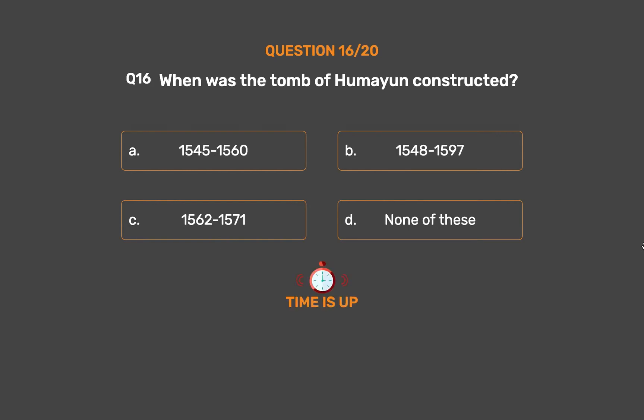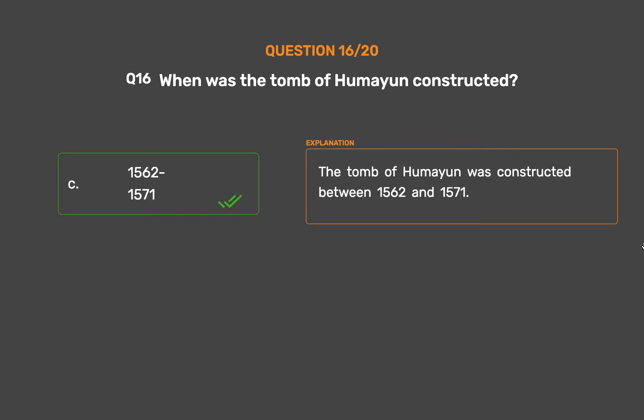The correct answer is Option C: 1562 to 1571. The tomb of Humayun was constructed between 1562 and 1571.